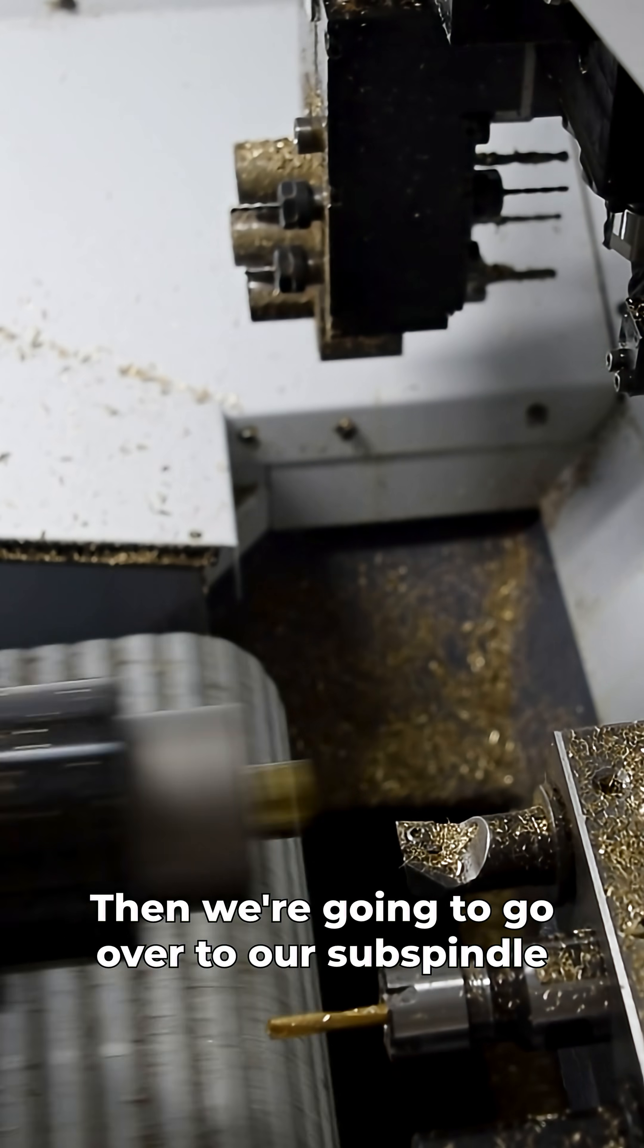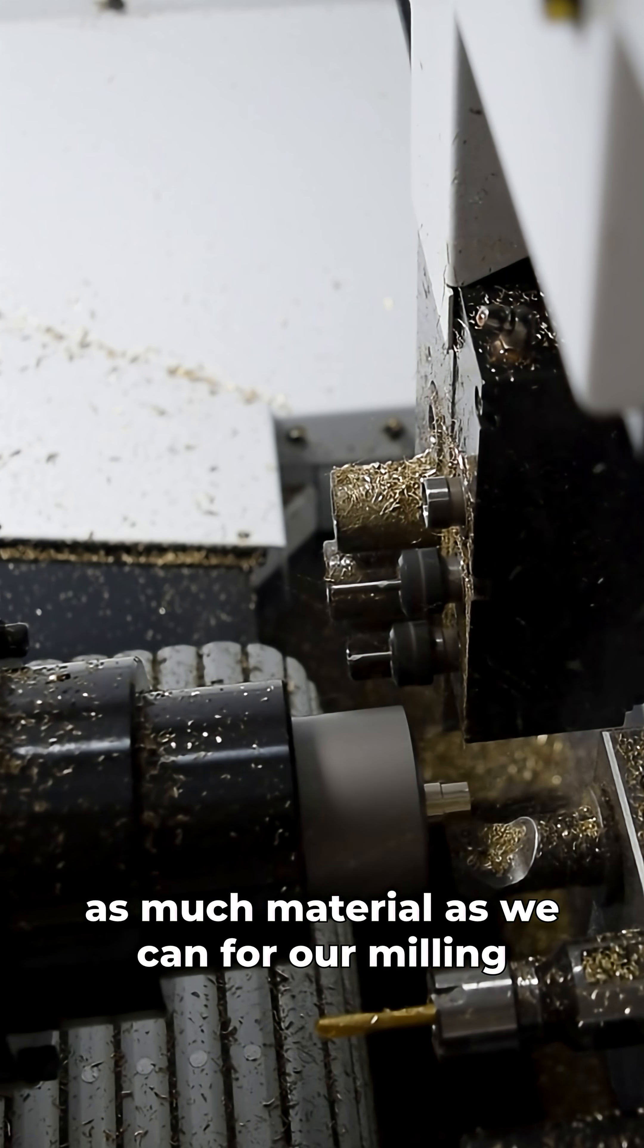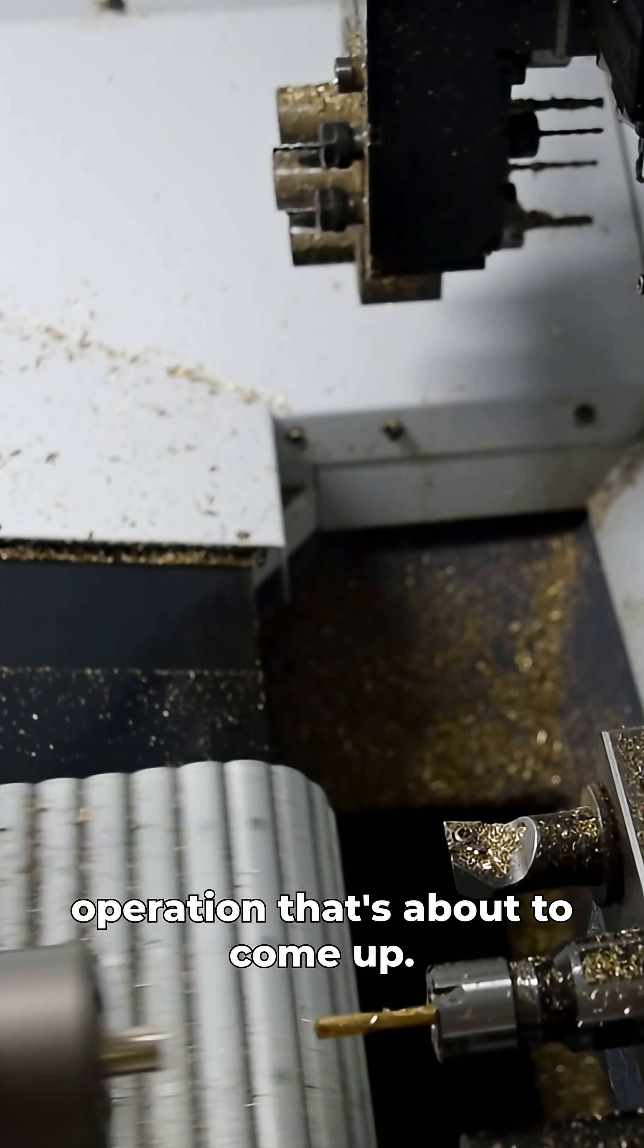Then we're going to go over to our sub spindle side where we're going to rough away as much material as we can for our milling operation that's about to come up.